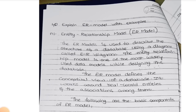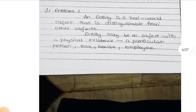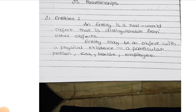ER model - ER stands for Entity Relationship model. This entity relationship model will show the data in a flowchart using diagrammatics. ER model is a data design. For example, when you open your settings, data is shown in a format - that structure is called entity relationship. So entities are real-time entities, for example: Person, Car, Employee.